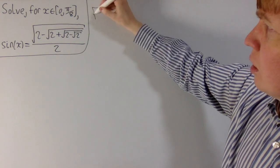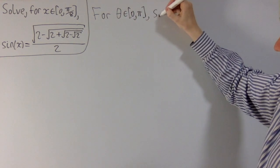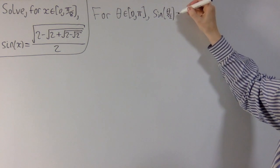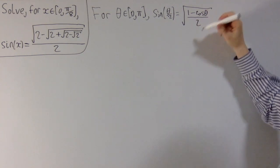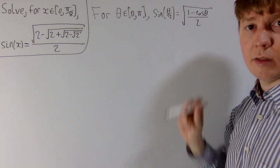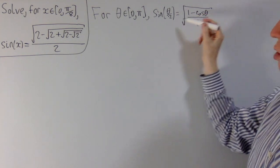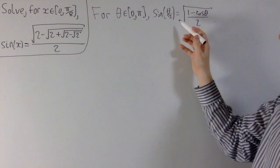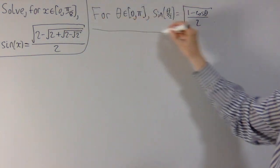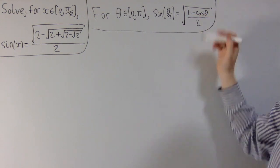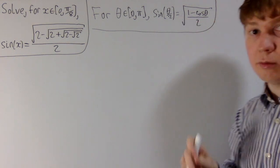I'll give you a slightly simplified version of the half-angle formula for sine. If you've got theta between 0 and pi, then sine of theta over 2 is going to be equal to the square root of 1 minus cos theta, divided by 2. You can see there's some structure of square root of something minus something else divided by 2. Normally you'd have plus or minus the square root, but I've restricted the range to where sine is positive, giving simpler formulas. This is a consequence of the double-angle formula for cosine — if theta is 2 times theta over 2, you can derive this from that formula.